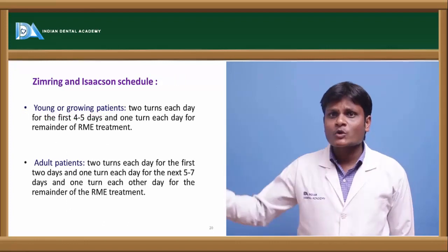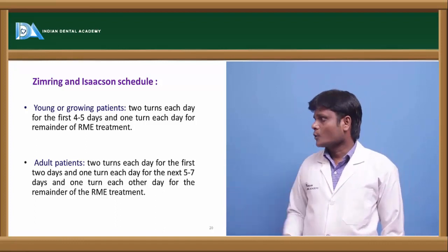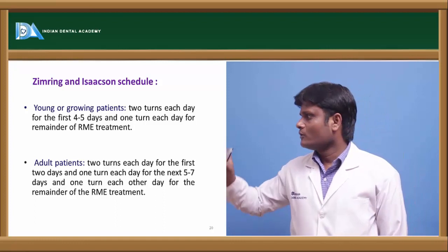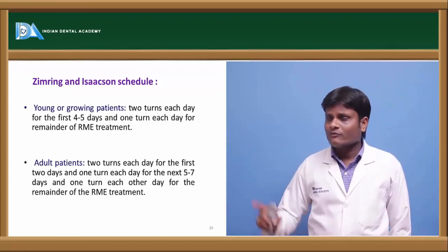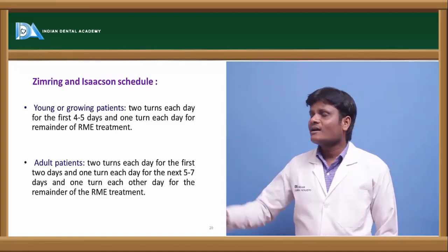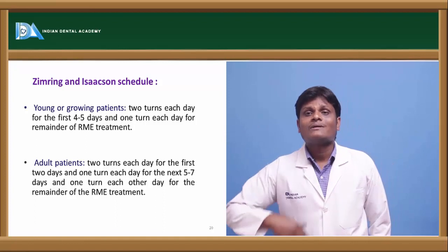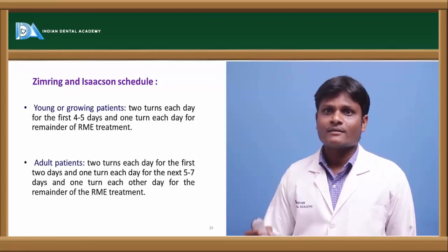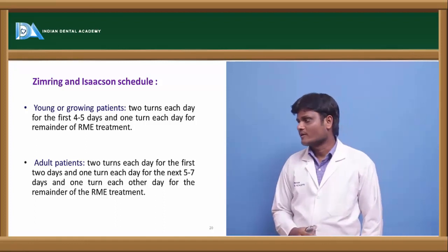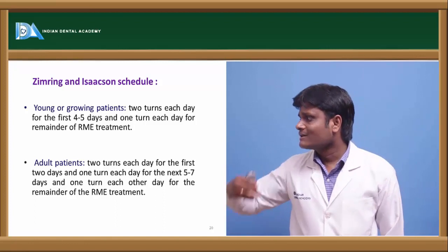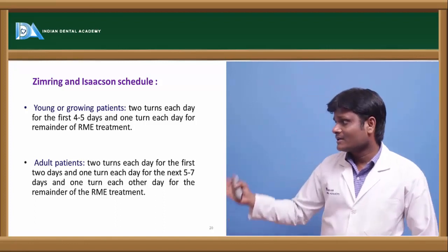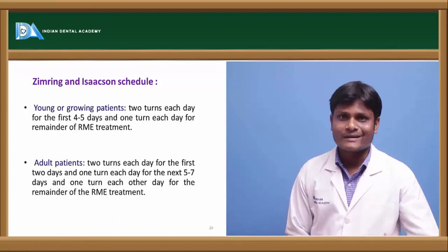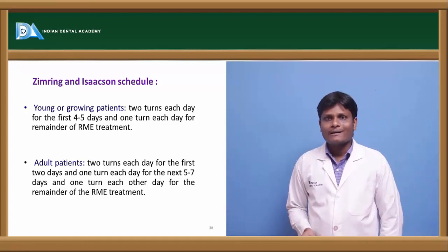According to the Zimring and Isaacson protocol: for young or growing patients, 2 turns each day for the first 4 to 5 days (1 turn = 90 degrees, so 180 degrees per day), then 1 turn each day for the rest of the RME treatment. For adult patients, two turns each day for the first two days, then one turn each day for the next five to seven days, and thereafter one turn per alternate day.